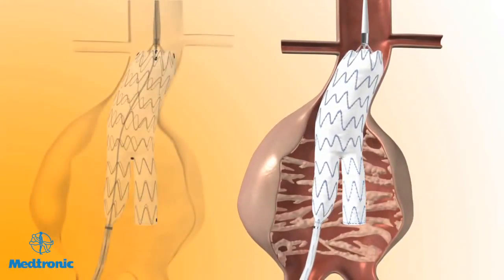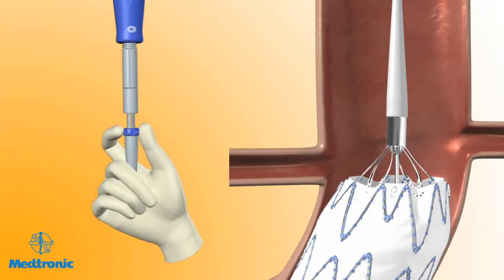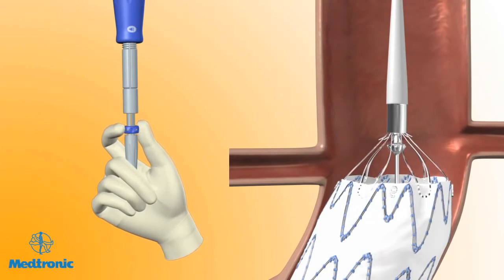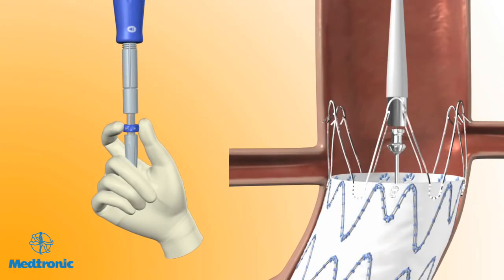Use angiography to verify the position of the bifurcated stent graft in relation to the renal arteries. Continue to hold the delivery system stationary with one hand on the front grip. With the other hand, rotate the back end wheel clockwise in the direction of the arrows to release the suprarenal stent with anchoring pins. Continue turning the back end wheel until all parts of the suprarenal stent are completely clear from the spindle of the delivery system. Confirm that the spindle has fully separated from the crowns of the suprarenal stent.